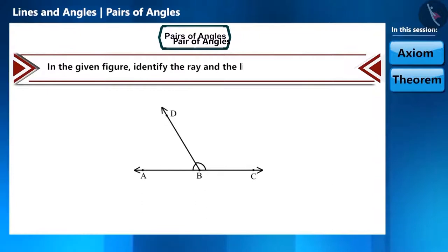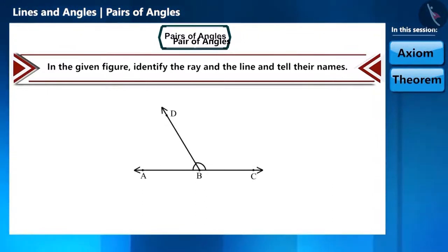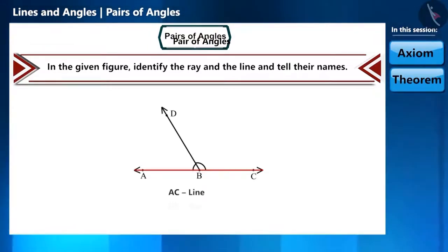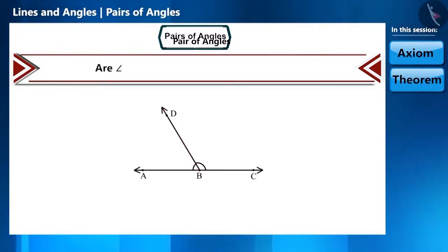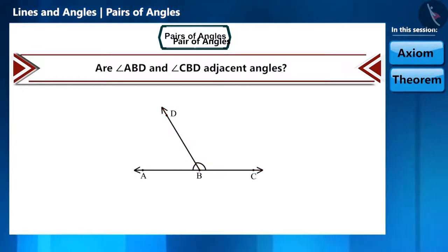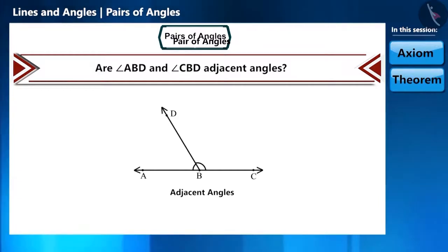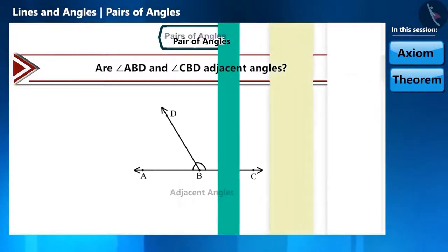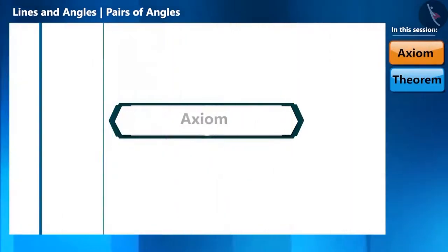In the given figure, identify the ray and the line and tell their names. Here, AC is a line and BD is a ray. Friends, are angles ABD and CBD adjacent angles? Yes, we have understood this figure well. Now let's move ahead and discuss an axiom related to it.